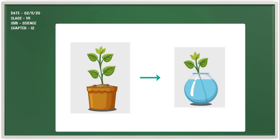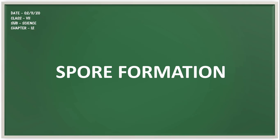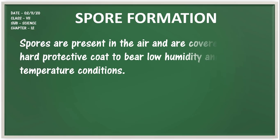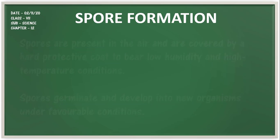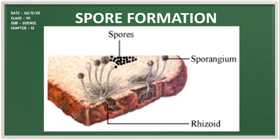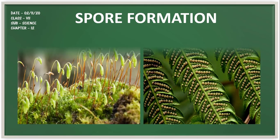Next is spore formation. Spores are present in the air and are covered by a hard protective coat to withstand low humidity and high temperature conditions. Under favorable conditions, spores germinate and develop into new organisms. You may observe spores as a cotton-like mesh on bread. When released, spores float in the air as they are very light and can cover long distances. Under favorable conditions a spore germinates and develops into a new individual. Plants such as moss and ferns also reproduce by means of spores.